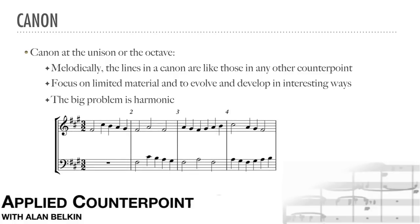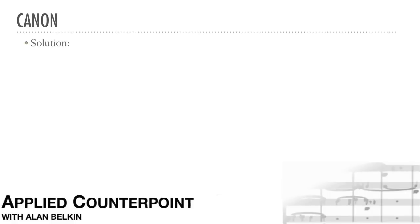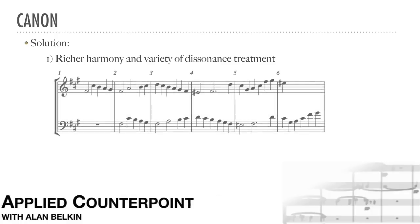Here's an example. As we can see, this canon can't seem to escape from the F-sharp tonic chord. Now, here's the same beginning with the problem solved. The solution to this dilemma is richer harmony, including seventh chords and also a variety of dissonance treatment, in particular the use of accented passing tones. A note that was consonant in the leading part can now become dissonant in the following part, allowing the music to move into different harmonies.